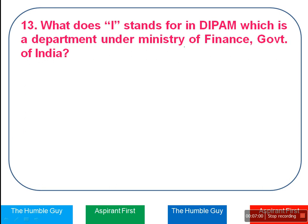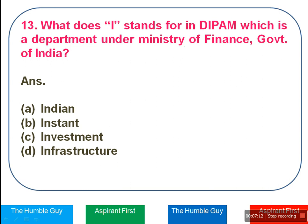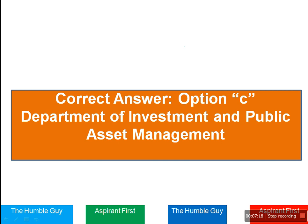What does 'I' stand for in DIPAM? It is very important — this is a department under the Ministry of Finance, Government of India. The options are Indian, Instant, Investment, or Infrastructure. The right answer is Option C — Investment. The full form of DIPAM is Department of Investment and Public Asset Management.